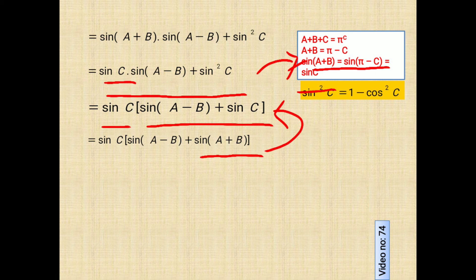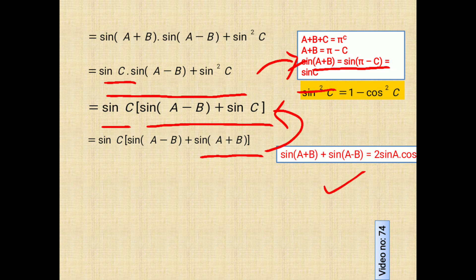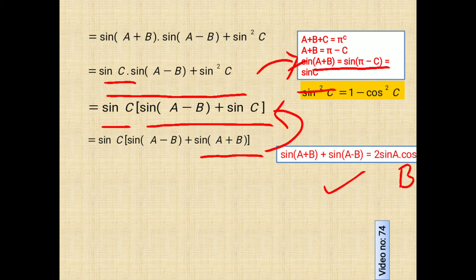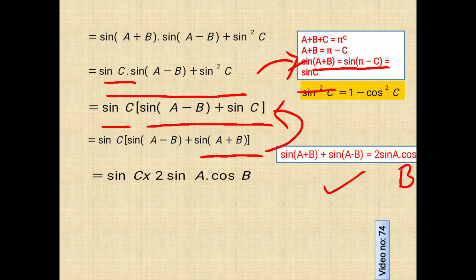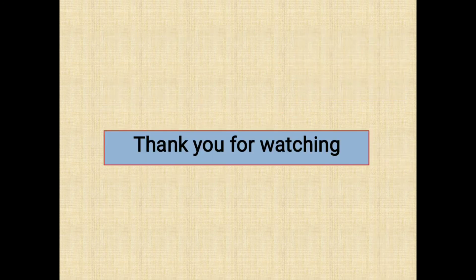Now let's recall the last formula for this question. As we have sin A plus B plus sin A minus B equals 2 sin A into cos B, we will write the same. And our efforts bring results here. Hence, 2 sin A into cos B into sin C that we will get on the right side. Hence, LHS equals RHS proved. Thank you for watching.